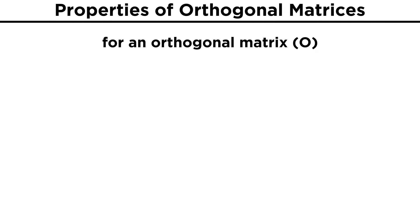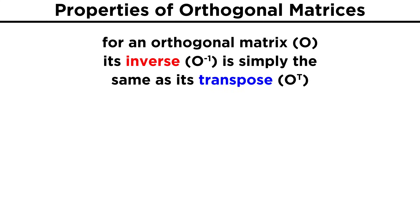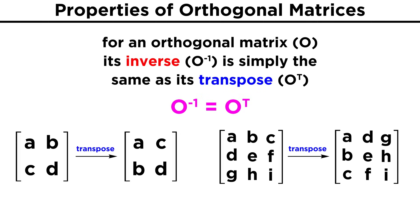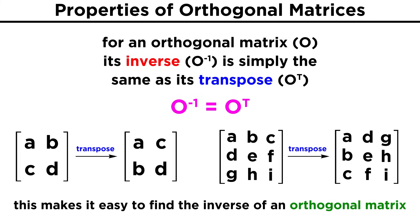The main benefit to having an orthogonal matrix is that the inverse of the matrix is simply the same as its transpose. By transpose, we mean that the columns of the matrix become the rows and vice versa. For a 2×2 and a 3×3 matrix, the first row becomes the first column, the second row becomes the second column, and so on. For an orthogonal matrix, generating the inverse is as simple as finding the transpose, making it extremely easy to find the inverse, as you simply swap some elements around.